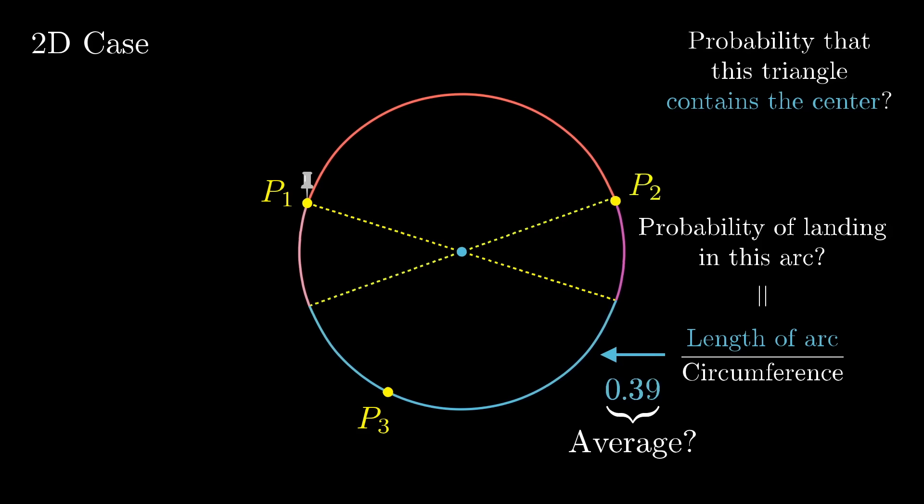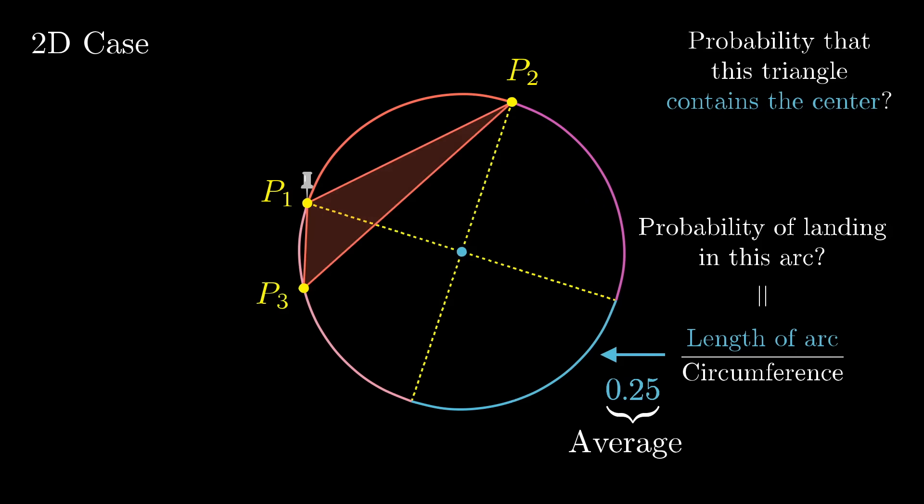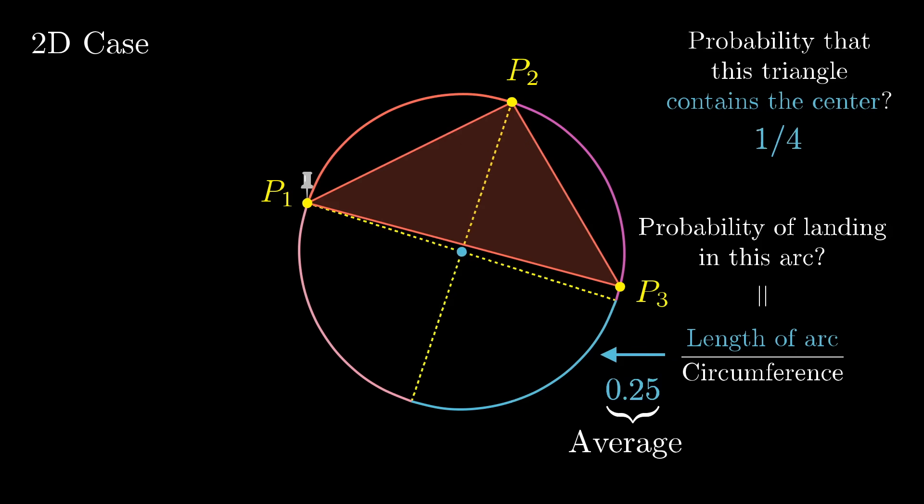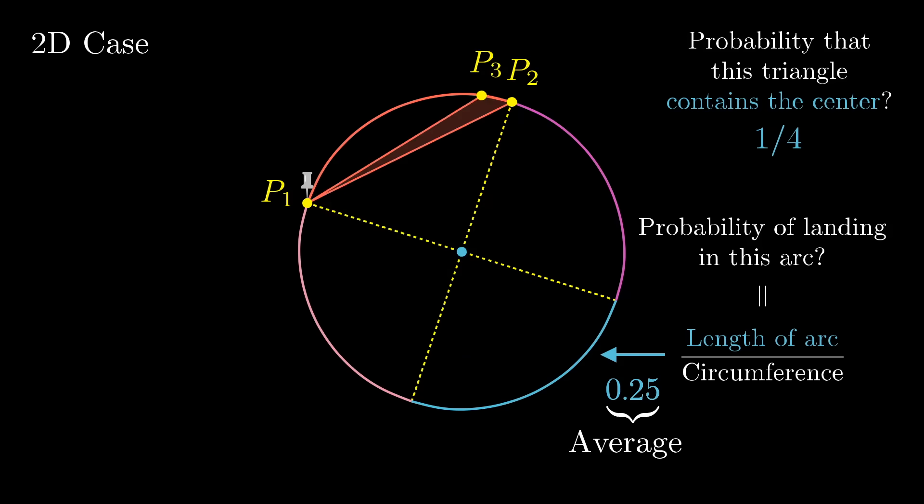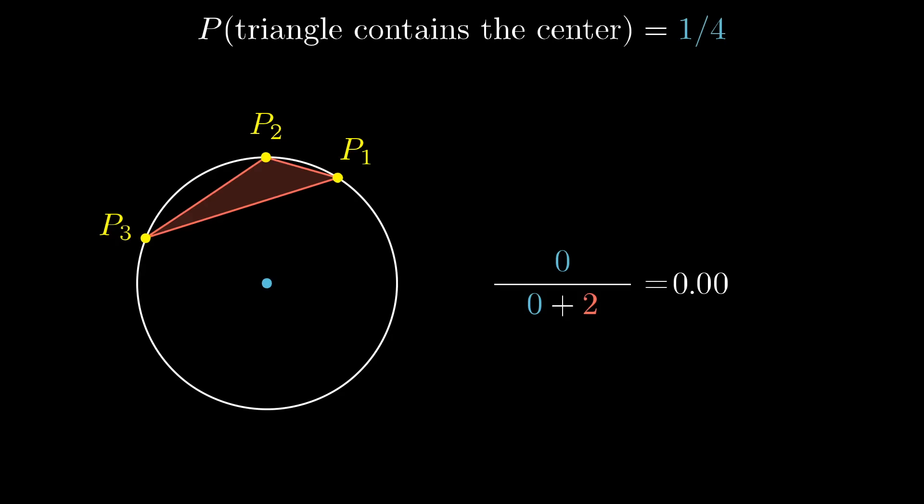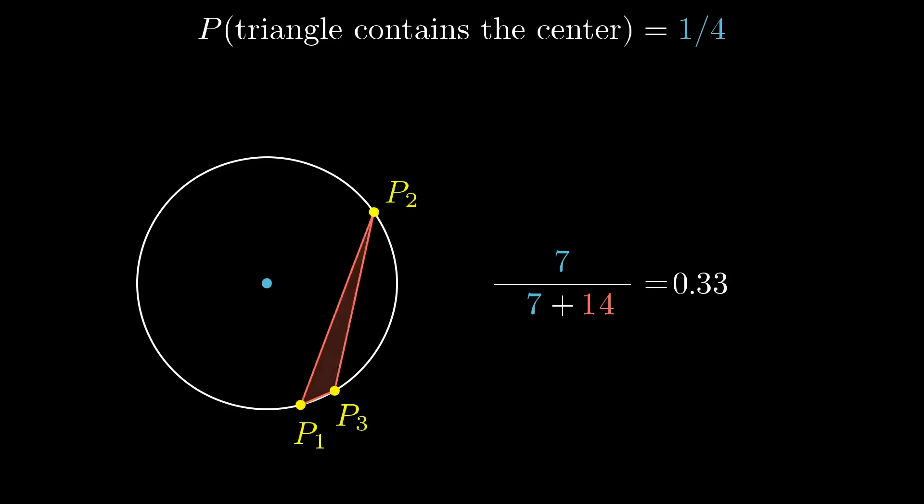So every proportion between 0 and 0.5 is equally likely, and that means that the average proportion is 0.25. So if the average size of this arc is a quarter of the full circle, the average probability that the third point lands in it is a quarter, and that means that the overall probability that our triangle contains the center is a quarter.